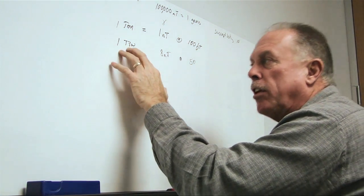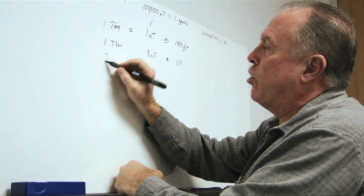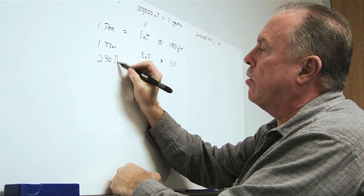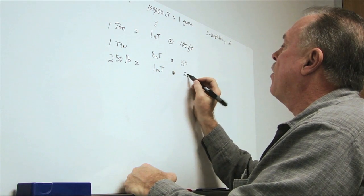But because it's linear with mass, we can also write this a different way. And that would be that 250 pounds equals one nanotesla at 50 feet.